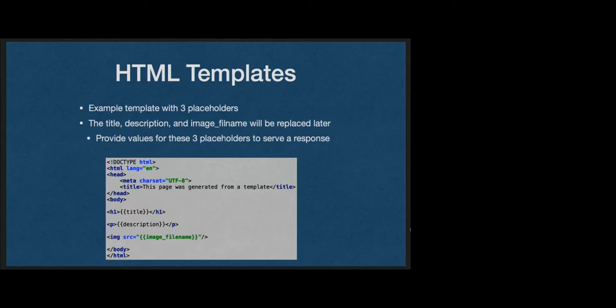Here's a very simple example. We have two placeholders, and I recommend this syntax — it comes from an HTML template engine called Handlebars. It uses double braces, which is pretty effective because they don't really show up in HTML very often. We're going to use placeholders with this double-brace notation to say 'this is where the title will go' and 'this is where the description will go.' When we read the file, we replace those — which can be as simple as a find and replace.